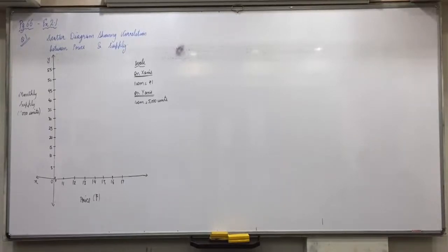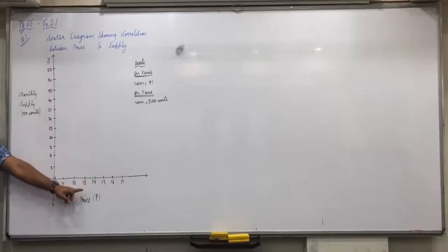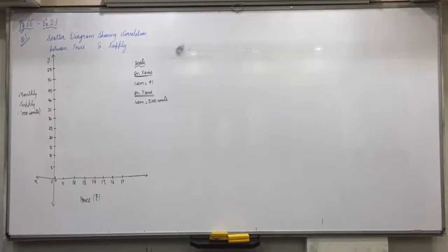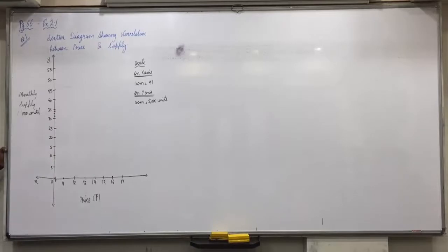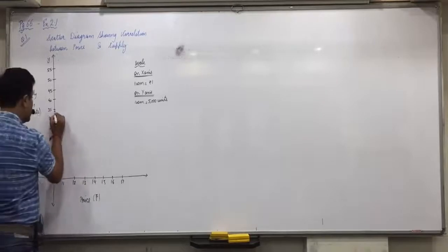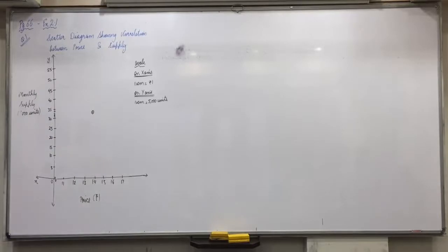Now plotting the points. For the point 14 and 32: 14 is directly available on the X-axis. 32 of supply is not at a marked gridline, so between 30 and 35 approximate it as 31, 32, 33, 34, 35. Mark 32 approximately. Where 14 and 32 intersect, mark the dot and circle it so it is clearly visible, especially when drawn in pencil.